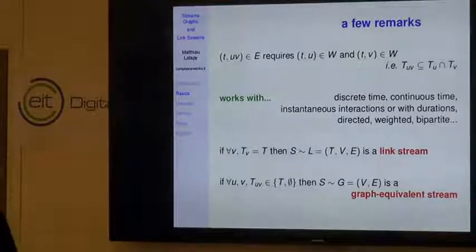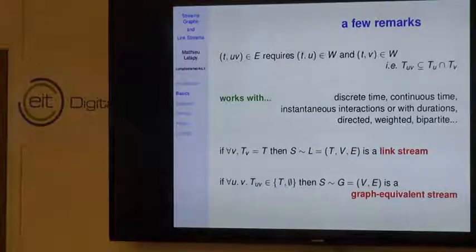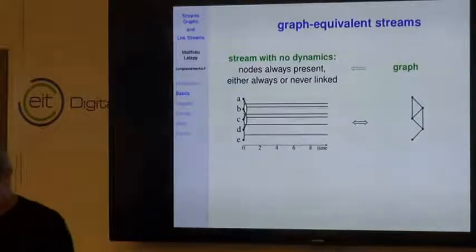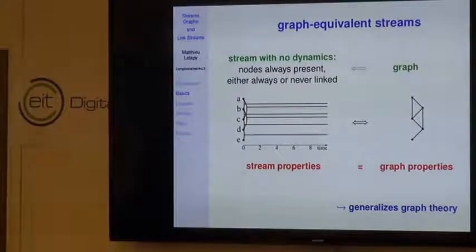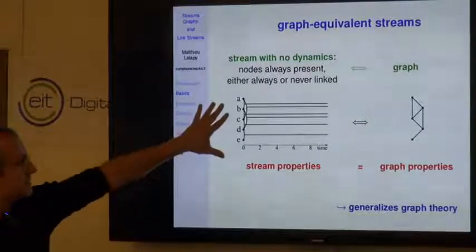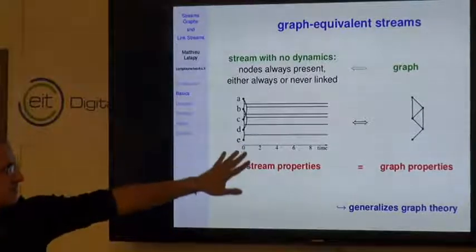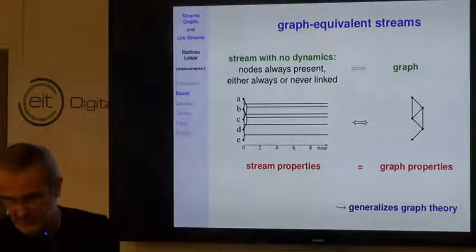Going further, if there is no dynamics on nodes and no dynamics on links—meaning each link is present either all the time or never—then the stream graph is equivalent to a graph. This gives a formal ground to our requirement that the theory must generalize graphs: when we have a graph-equivalent stream, we want the properties we define on the stream to be equal to the properties of the corresponding graph. We check this every time we define a property.